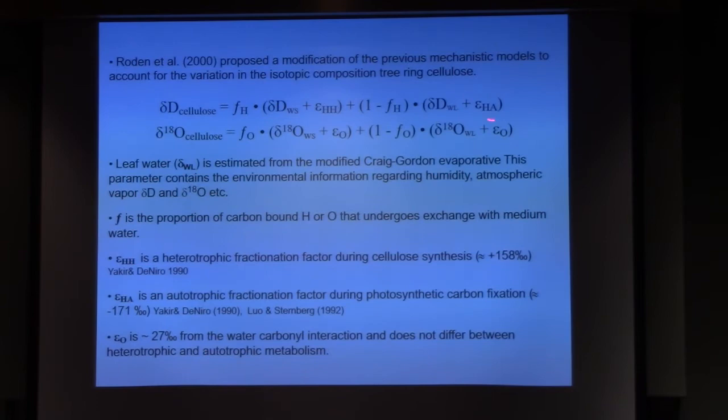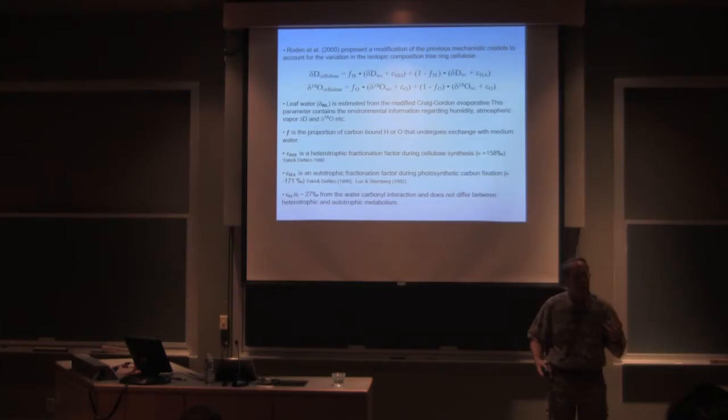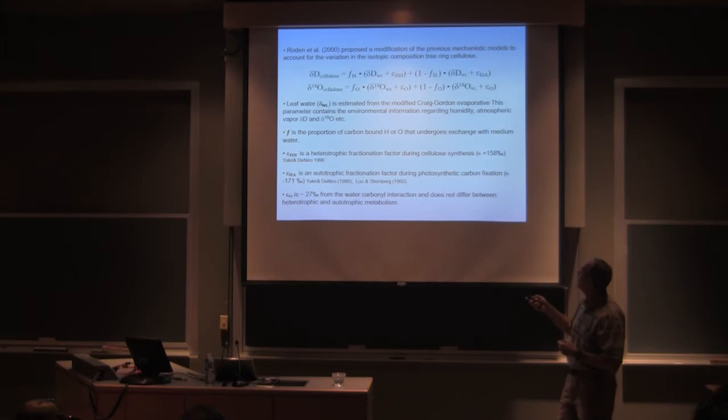Then at this point, you have what we call an autotrophic fractionation. The autotrophic fractionation is photosynthesis. That's an autotroph. So that's the NADPH system, and that's, you know, the minus 171. And then when you make cellulose, you're making cellulose in the stem. That's a heterotrophic fractionation because you're at a different location, and that's the plus 158.